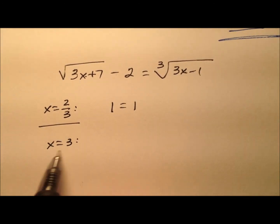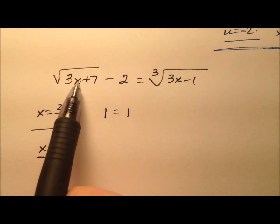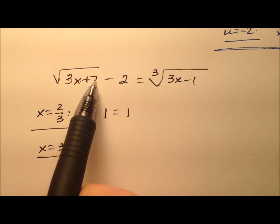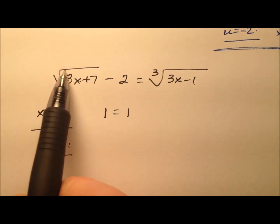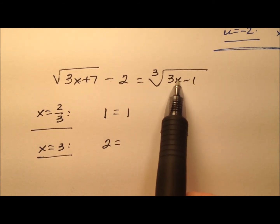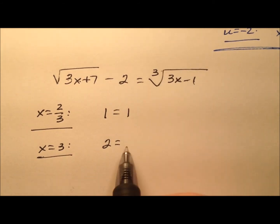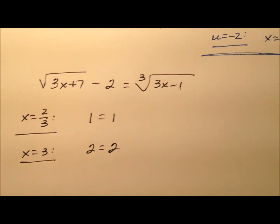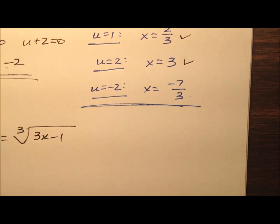So let's move on to x equals 3. Next. 3 times 3 is 9 plus 7 is 16. Square root is 4. 4 minus 2 is 2. So 3 times 3 is 9 minus 1 is 8. Cube root is 2. So 2 equals 2. So 3 also works.